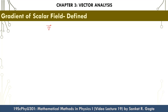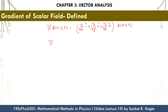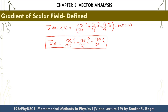Gradient of a scalar field is obtained by operating the del operator onto a scalar field, say phi. The del operator is (∂/∂x)i + (∂/∂y)j + (∂/∂z)k, operated onto the scalar field phi. What we get — del phi — then becomes (∂phi/∂x)i + (∂phi/∂y)j + (∂phi/∂z)k. This is how you obtain the gradient of a scalar field.